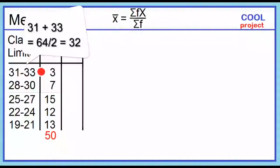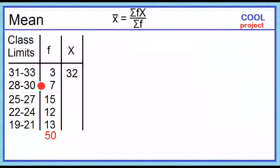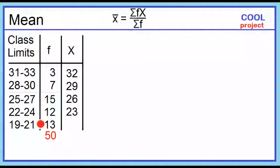31 plus 33 is 64, divided by 2 is 32. 28 plus 30 is 58, divided by 2 is 29. 25 plus 27 is 52, divided by 2 is 26. 22 plus 24 is 46, divided by 2 is 23. 19 plus 21 is 40, divided by 2 is 20.